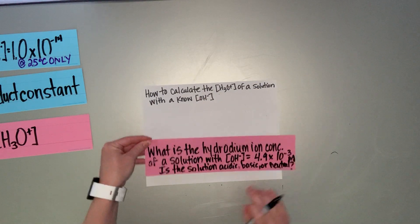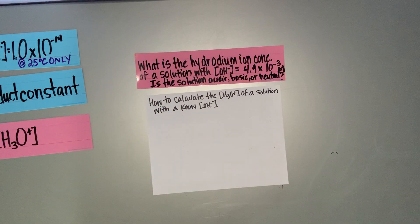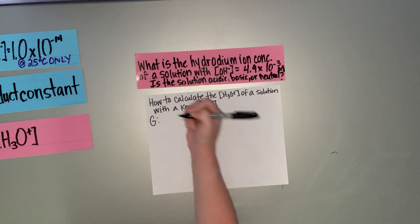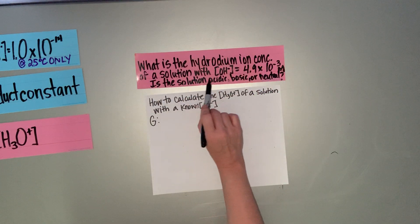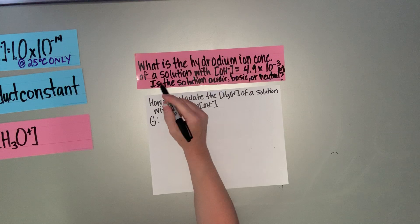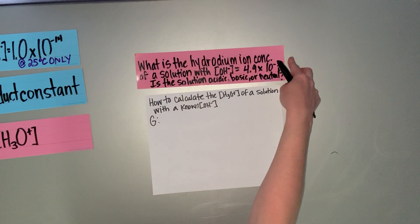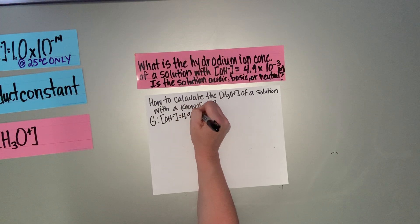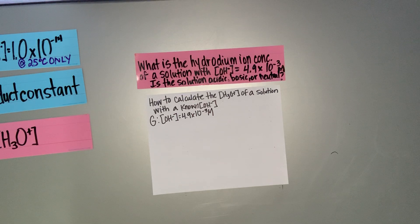Our first example problem: how to calculate the hydrogen ion concentration of a solution with a known hydroxide ion concentration. I use GUESS in my class — Given, Unknown, Equation, Substitute, Solve. What is the hydronium ion concentration of a solution with a hydroxide ion concentration of 4.9 times 10 to the minus 3rd molar? Is the solution acidic, basic, or neutral? Our given is the hydroxide ion concentration is 4.9 times 10 to the minus 3rd molar.